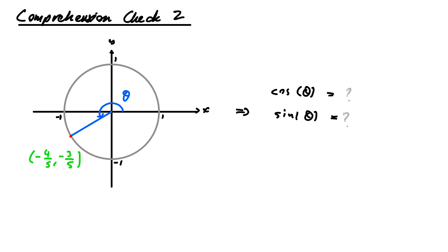Cosine, by definition, is the x-coordinate of this position given by the angle theta. So that, visibly, is minus 4 over 5. And sine of theta, same story, the y-coordinate — minus 3 over 5.